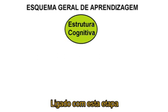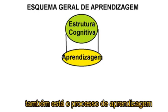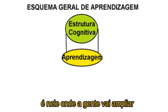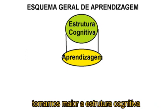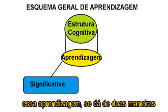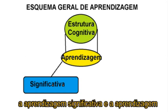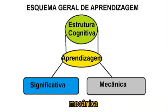Ligado com esta etapa também está o processo de aprendizagem. É nele onde a gente vai ampliar as nossas ideias, e toda vez que a gente aprende, está tornando maior a nossa estrutura cognitiva. Essa aprendizagem se dá de duas maneiras já faladas anteriormente: a aprendizagem significativa e a aprendizagem mecânica.